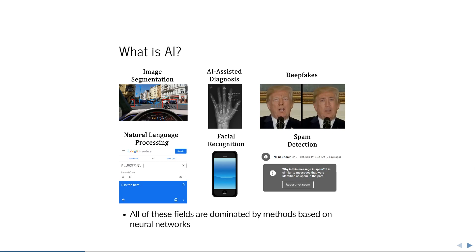Another example is facial recognition — as soon as you turn on your camera on your phone, there is a pre-trained neural network that knows what a face looks like and tries to detect it from the image. Another classical example is spam detection, where an algorithm decides whether something is spam or not. All of these fields are dominated by methods based on neural networks. As of 2020, all of this works with neural networks and everything else performs worse.